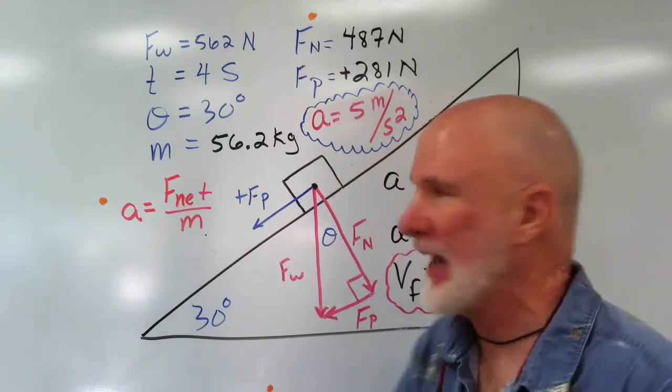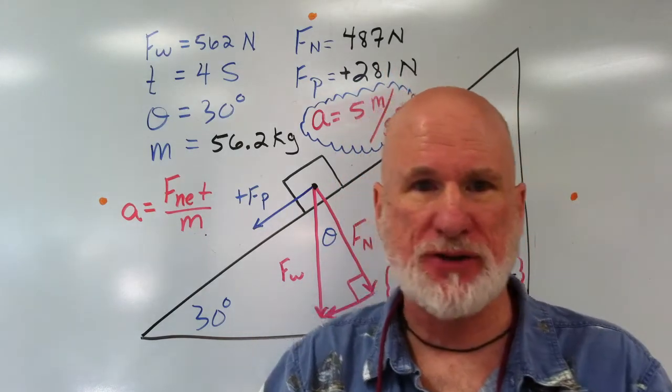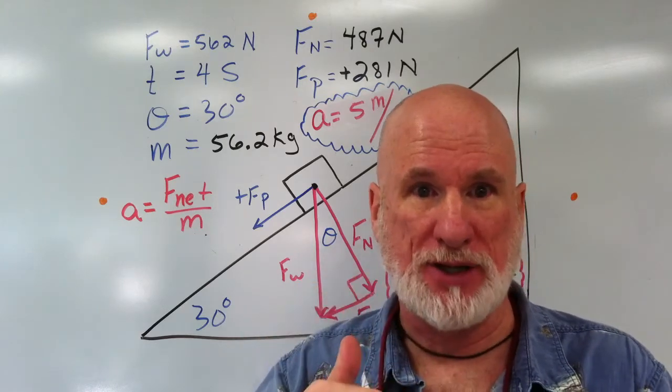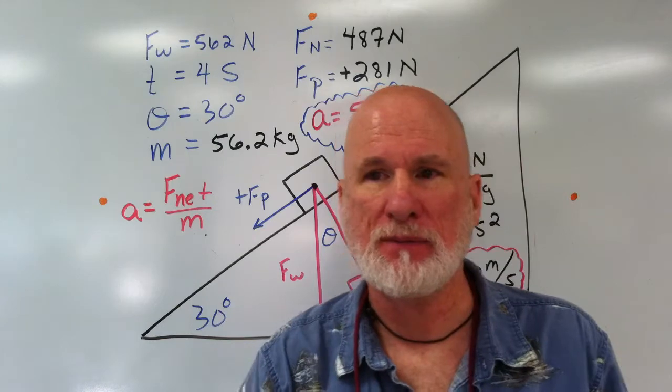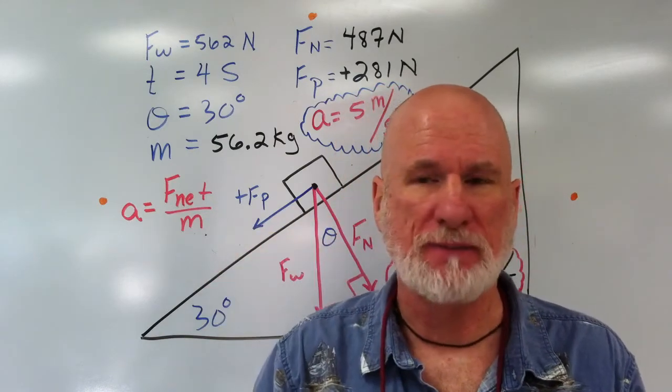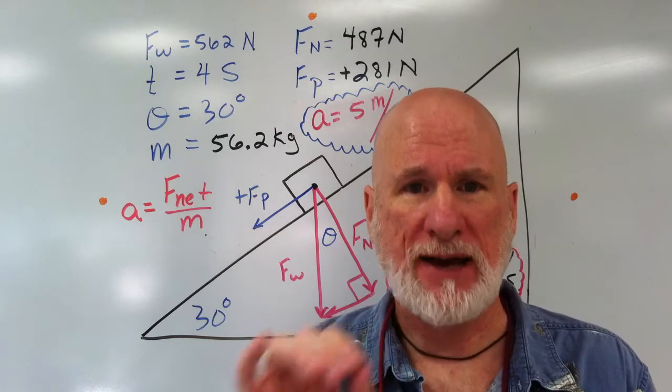The weight perpendicular to the plane, FN, is 487 newtons. FP, which is the weight parallel to the plane, is plus 281 newtons. Now, there's no friction, so the net force will equal FP.